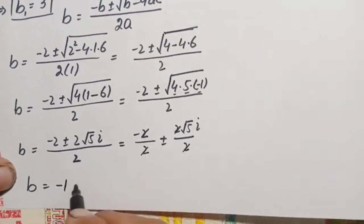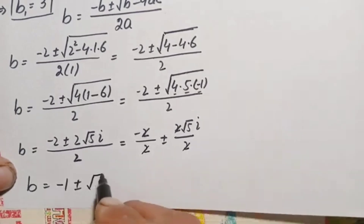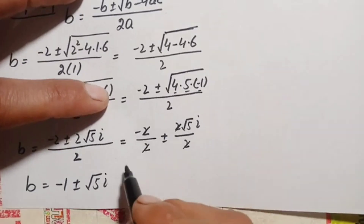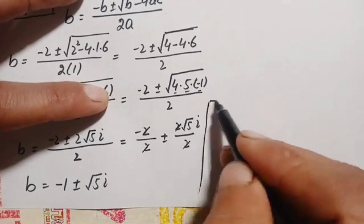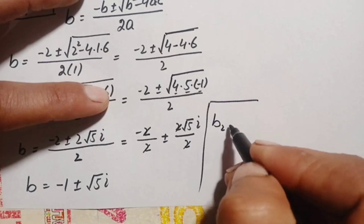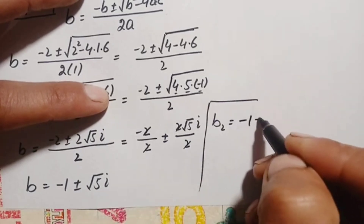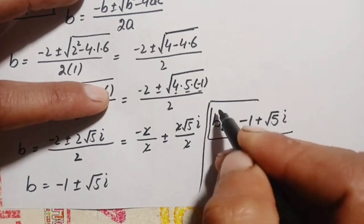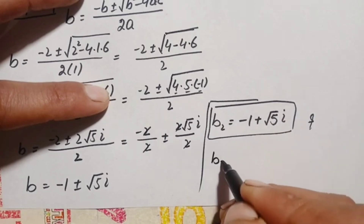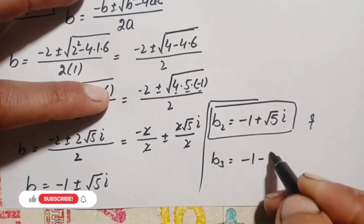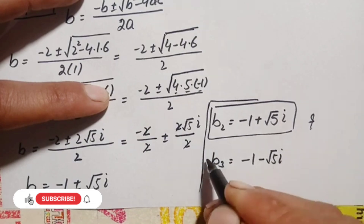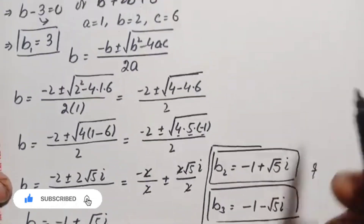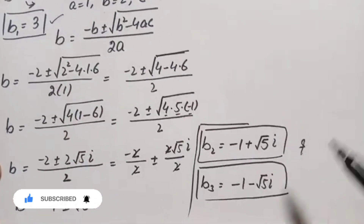Simplifying by canceling the 2s, we get b equals negative 1 plus or minus square root of 5 times i. So we have two complex solutions: b₂ equals negative 1 plus square root of 5 times i, and b₃ equals negative 1 minus square root of 5 times i. In summary, the three solutions are: b₁ equals 3 (real), and b₂, b₃ are complex solutions.